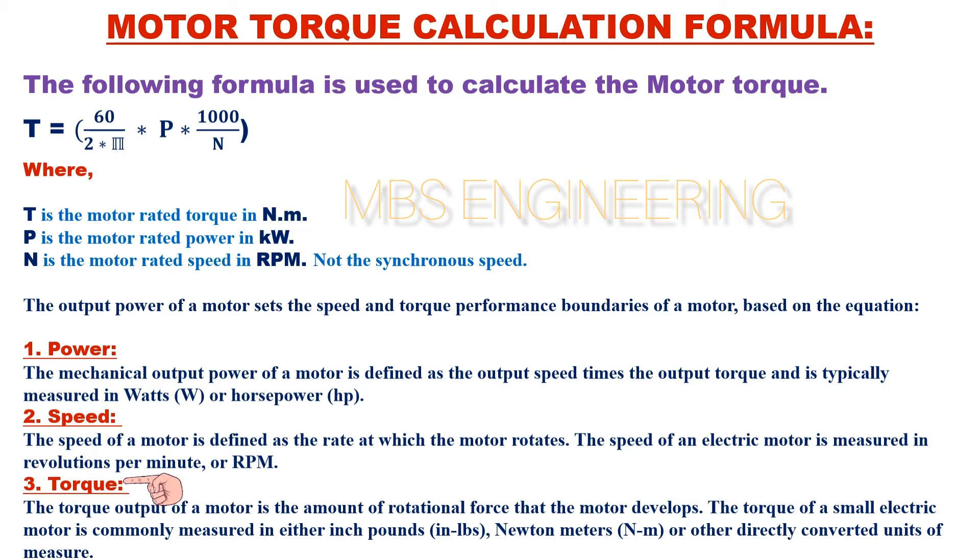Third, we understand what you mean by torque. The torque output of a motor is the amount of rotational force that the motor develops. The torque of a small electric motor is commonly measured in either inch-pounds (in-lbs), newton meters (Nm), or other directly converted units of measure.